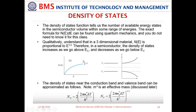In the valence band, density of states decreases as you move deeper because the region is filled with electrons, leaving less empty states. The density of states is higher in the conduction band (more empty states) and lower in the valence band. This graph shows the energy band structure and the density of states N(E) plot, where density of states keeps increasing as you move deeper into the conduction band.